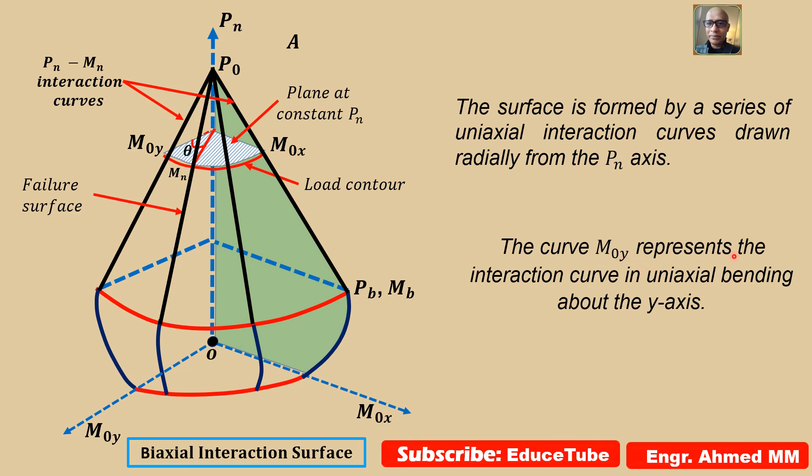The curve MOY represents the interaction curve in uniaxial bending about the y-axis. See, this looks very clear. Now it is very clear what we need to draw and what the curve is. Now we will see the intermediate one.